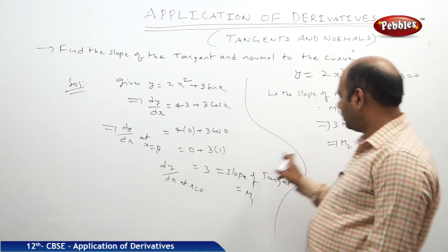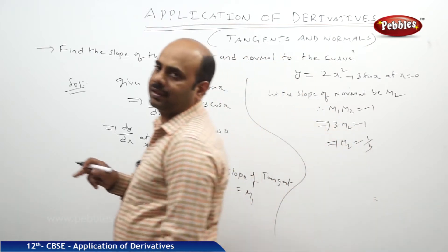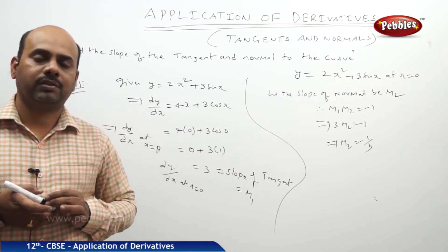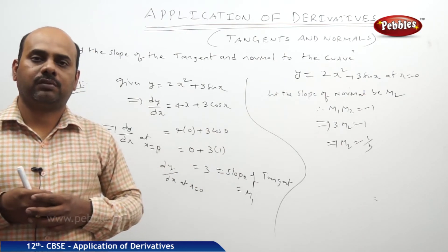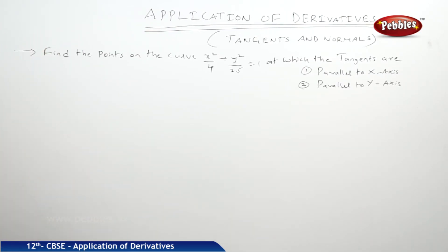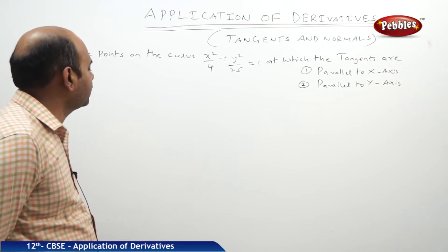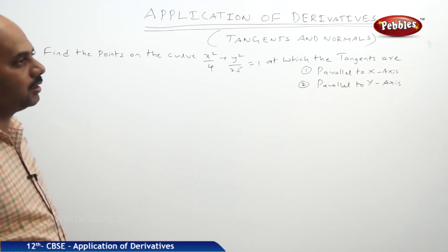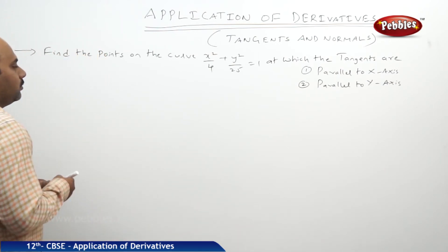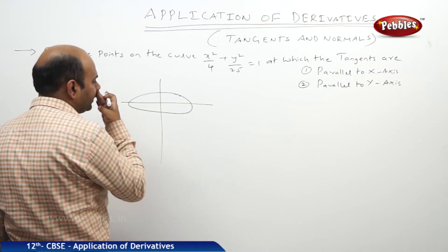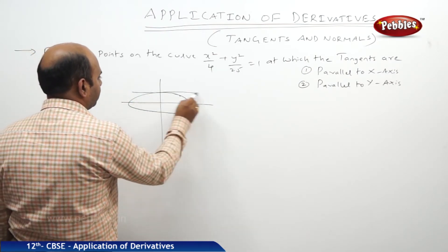So the slope of the tangent is 3 and the slope of the normal is -1/3. Whenever we are asked to find the slope of the normal, find the slope of the tangent first and then apply the condition m₁ × m₂ = -1. Now we shall see a very important short answer question: Find the points on the curve x²/4 + y²/25 = 1 at which tangents are parallel to the x-axis and tangents are parallel to the y-axis.